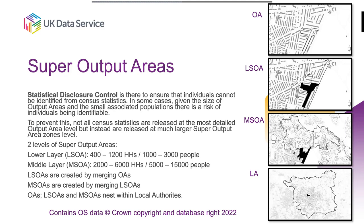There are two layers of super output areas: a lower layer super output area (LSOA) and a middle layer super output area (MSOA). The lower layer covers up to 3,000 people and 1,200 households; the middle layer up to 15,000 people and 6,000 households. These are created by merging output areas together to form LSOAs, and then merging LSOAs to form MSOAs. A single output area merges with five others to create a single LSOA, and five LSOAs in turn form an MSOA. Importantly, OAs, LSOAs and MSOAs all nest within local authorities and nest perfectly within each other.